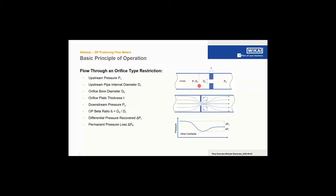You have a flow restriction — in this case it looks like an orifice plate — with a thickness T and flow bore D0, and downstream pressure P2. As the flow approaches the element, the flow speeds up and creates a shape called a vena contracta as it passes through the primary element. It accelerates, the pressure drops, and it flows through the primary element and recovers downstream.